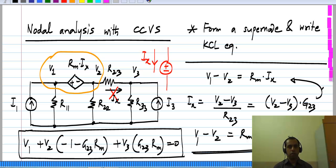Now there is a problem because you do not know what the current through the voltage source is and earlier we formed a super node and ignored that current altogether, but here that current is controlling another voltage source.